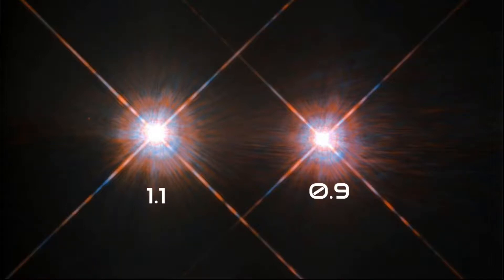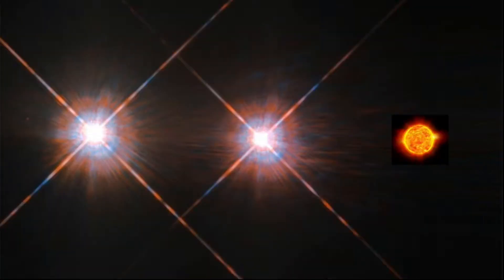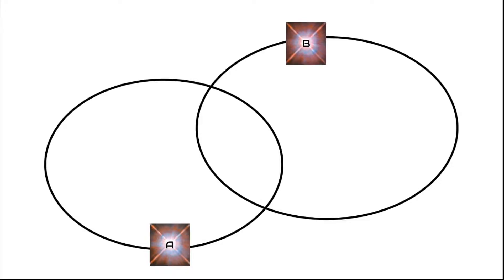Alpha Centauri A is 1.1 times the mass of the Sun, and Alpha Centauri B is 0.9 times the mass of the Sun. A and B are fairly similar to the Sun. A and B are in a tight binary system. It is called a binary system because they are similar in mass. So they orbit each other, not one orbits the other.